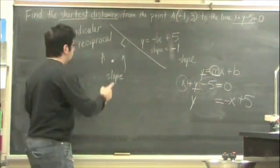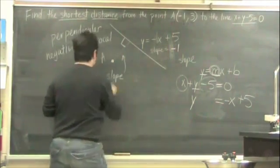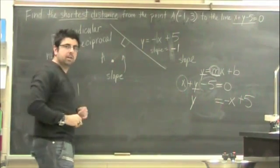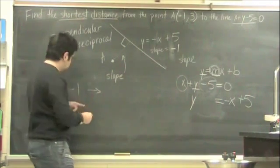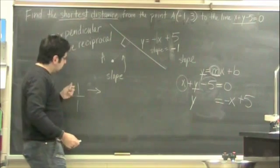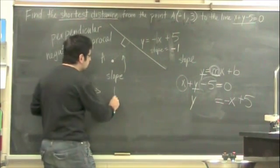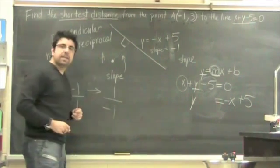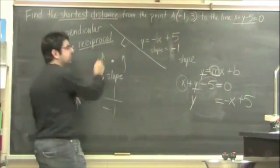If the slope of one equation is negative 1, the reciprocal - and negative 1 really means negative 1 over 1 - the reciprocal of negative 1 over 1 is 1 over negative 1. But we haven't yet implemented, we've just done the reciprocal. We have not implemented the negative.